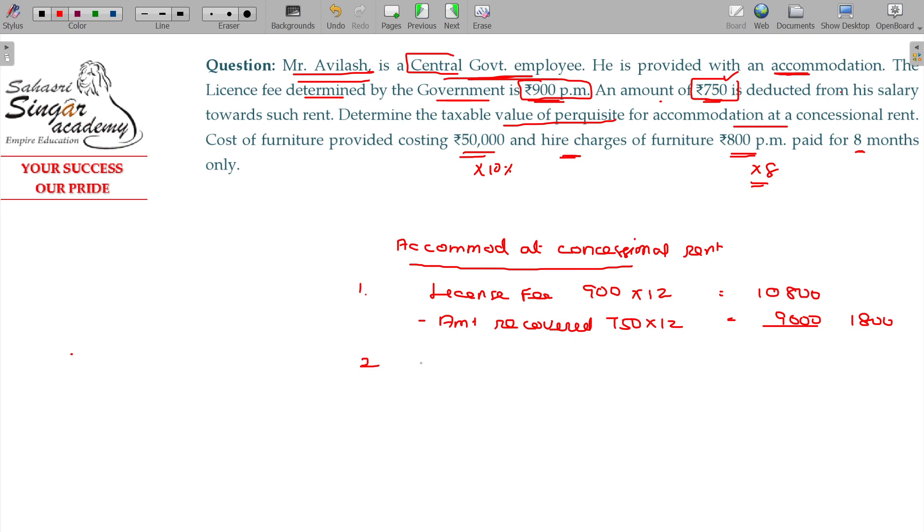Second item: furniture provided. 50,000 original cost value. 10% will be calculated, which equals 5,000.